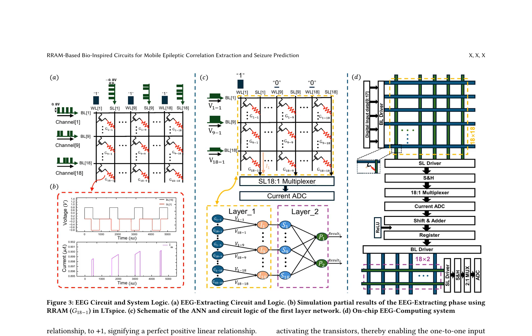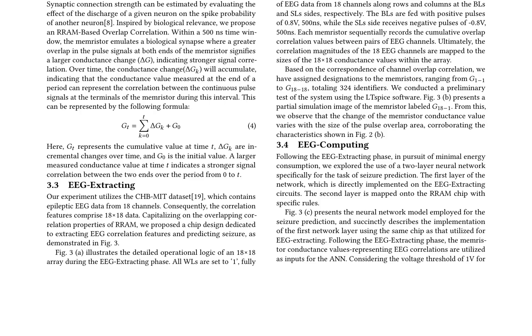The authors propose an RRAM-based overlap correlation method, where the conductance change (ΔG) accumulates over time, indicating the correlation between the continuous pulse signals at the terminals of the memristor during a given interval. This is represented by the formula: Gt = Σ(k=0 to N) ΔGk + G0, where Gt represents the cumulative value at time t, ΔGk are incremental changes over time, and G0 is the initial value.